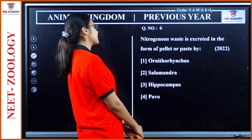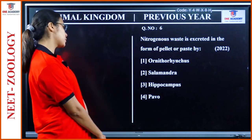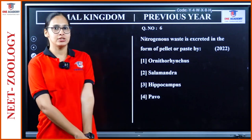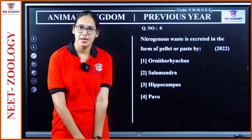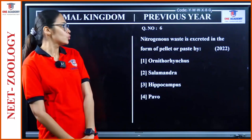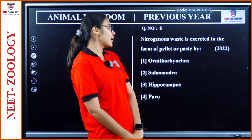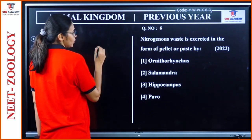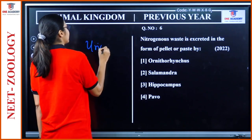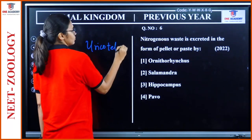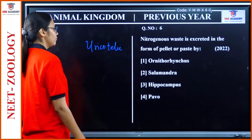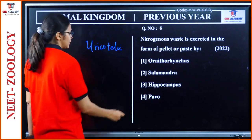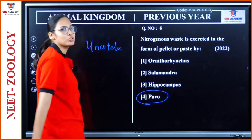Question 6: 'Nitrogenous waste is excreted in the form of pellet or paste by which organism?' This condition is called uricotelic and it applies to birds and reptiles. Among the options, Pavo — which is peacock — is the answer, so option 4.